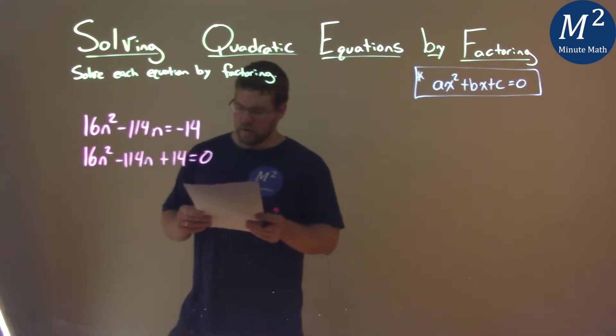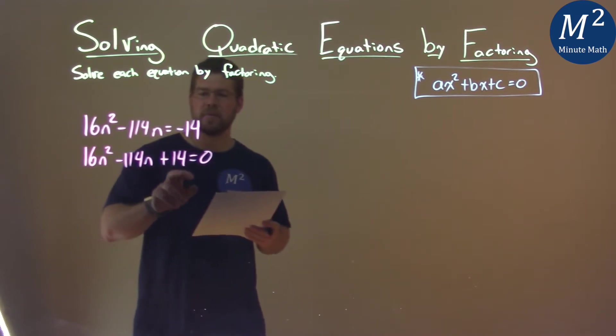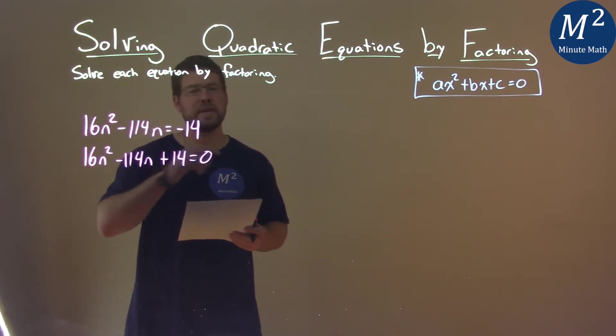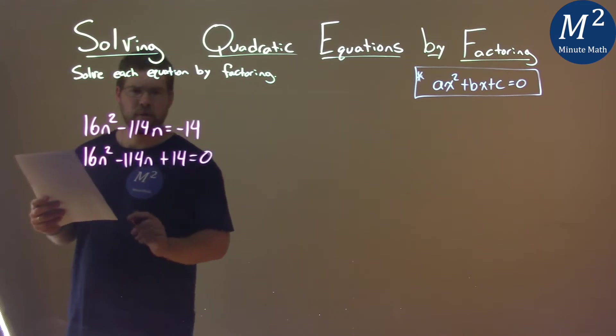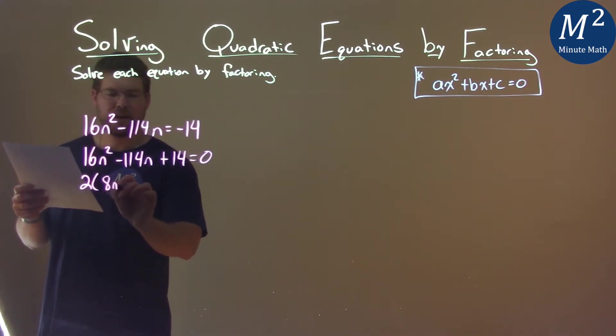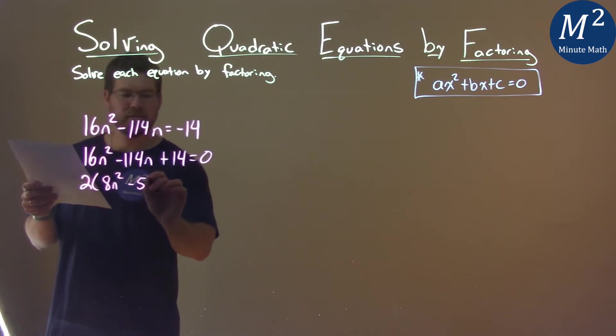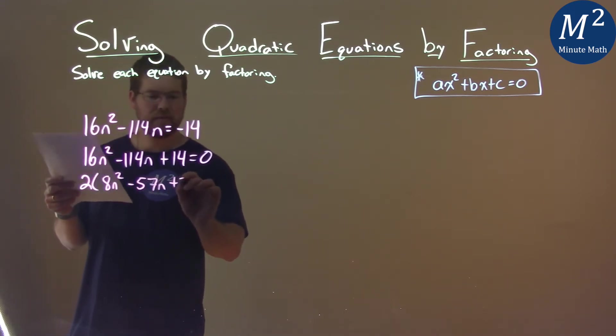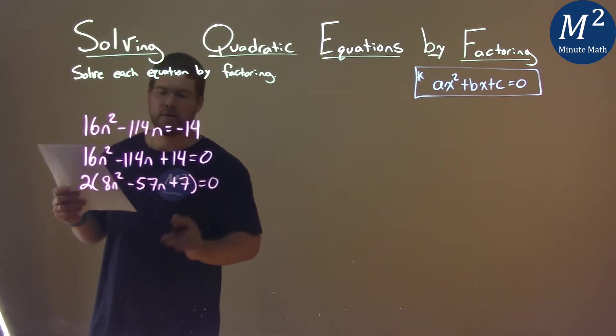Now, one thing I notice is that each one of these numbers is even. That means 2 goes into each one. So let's pull out a 2 from all parts here. If I do that, I have 2 times 8n squared minus 57n plus 7 equals 0.